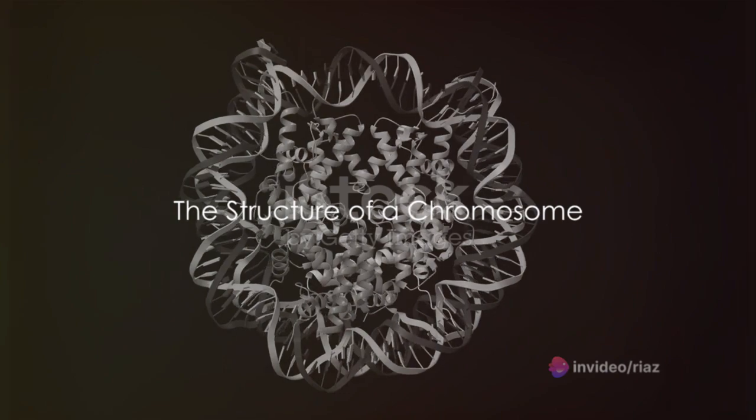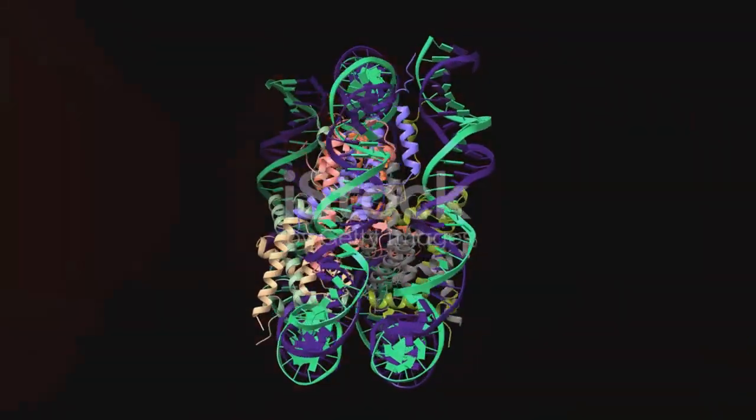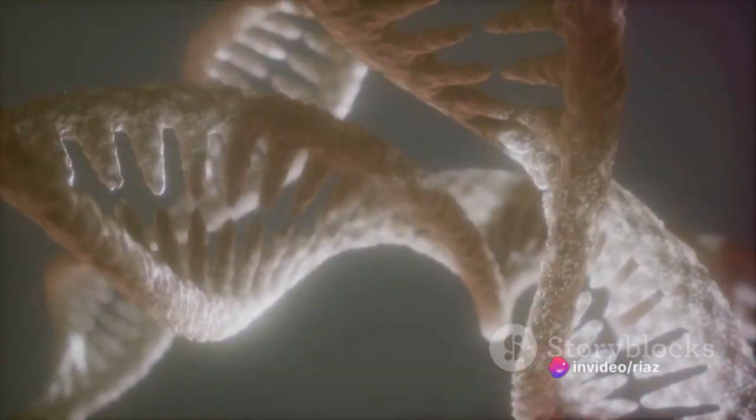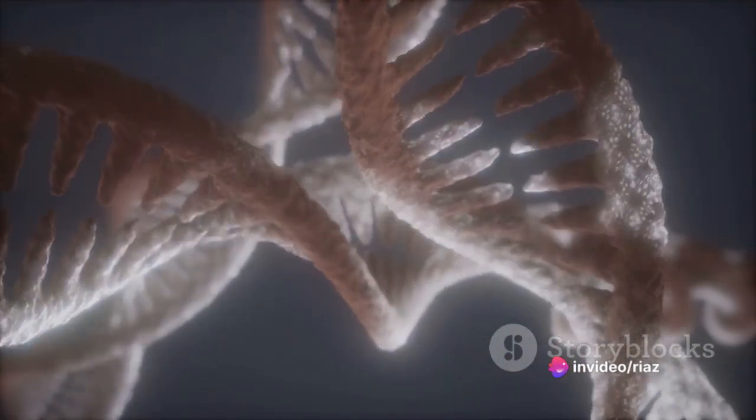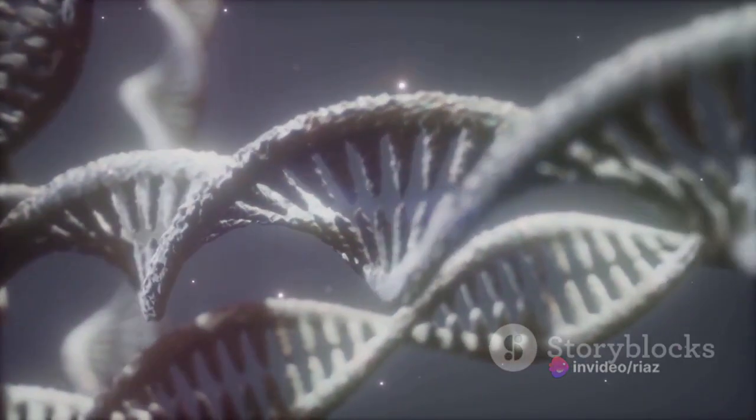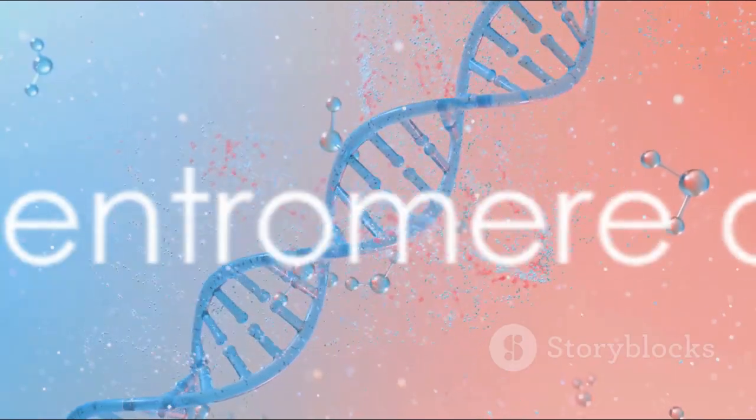Now, picture a string of pearls. Each pearl represents a structure called a nucleosome, which consists of a segment of DNA wound around eight histone proteins. These nucleosomes coil further to form a thicker fiber, which coils even more to form a supercoil. Finally, these supercoils wind up to form the familiar X-shaped structure we know as a chromosome.